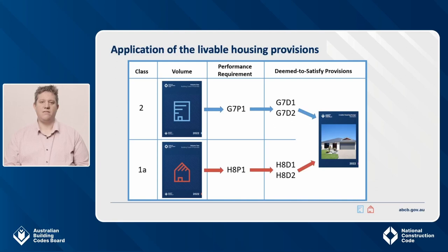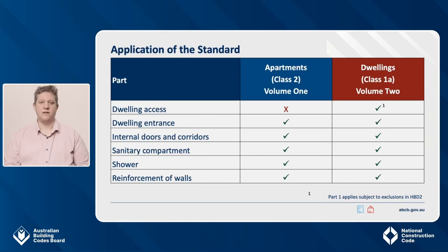These call up the ABCB standard for liveable housing design. The standard details technical provisions for DTS compliance for dwellings. This table illustrates how the standard applies to apartments and dwellings. The NCC already has provisions for access to apartments in Part D4 of Volume 1. Therefore, the dwelling access provisions of the standard do not apply to Class 2 apartments. All other parts of the standard ordinarily apply. Let's take a closer look at the application of the standard to Class 2 apartments.